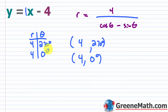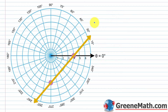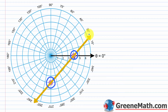With these two points — (4, 0°) at the 0° position and (4, 270°) swinging around to 270° — we can sketch the line on the polar grid by drawing a straight line through both points.